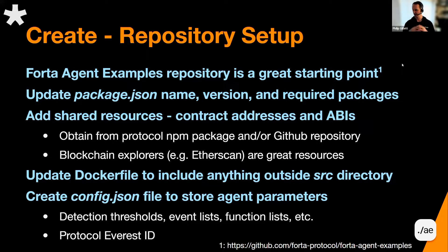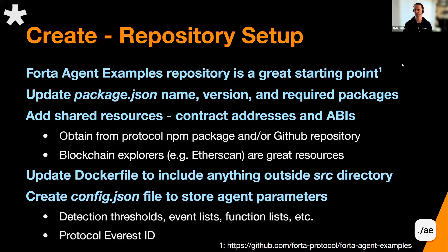As far as shared resources — you might have multiple agents that all need access to the same addresses and ABIs for the contracts. It's good to keep those in a central place, whether that's a central directory or JSON data files that all of your agents can access. Some protocols will provide an NPM package; we encourage you to go that route because those will give you up-to-date addresses and ABIs in case anything changes. You may also have to dig in the protocol's GitHub repository, and please use Etherscan or other blockchain explorers — they often have the ABI and contract source code published there.